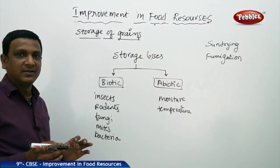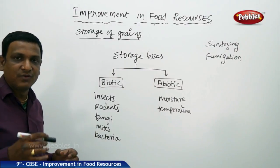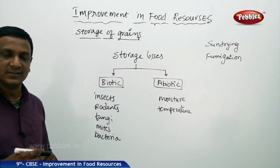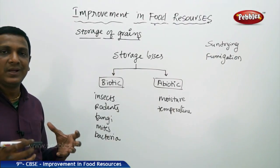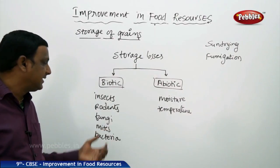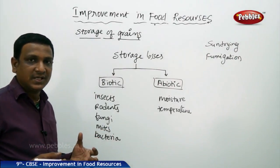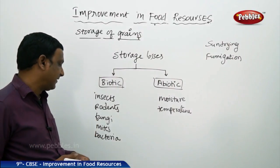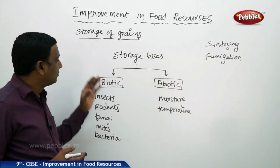Fungi cause spoilage in certain items, mostly vegetables and other quickly perishable items. Any quickly perishable items are easily affected by fungus. If any produce has high water content, fungus will affect it. Mites and bacteria are also biotic factors which cause storage loss.